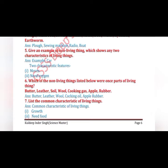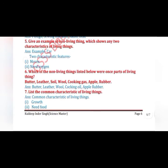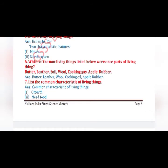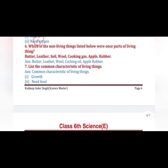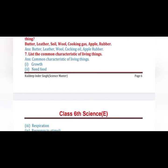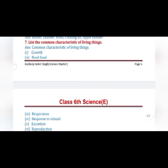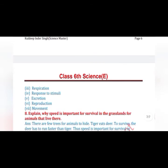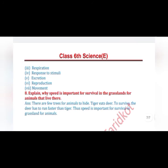Our sixth question: which of the following non-living things were once part of a living thing? The answer is: butter, leather, wool, cooking oil, apple, and rubber. Our seventh question: list the common characteristics of living things. The answer is: number one, growth; number two, need food; number three, respiration; number four, response to stimuli; number five, excretion; number six, reproduction; number seven, movement.